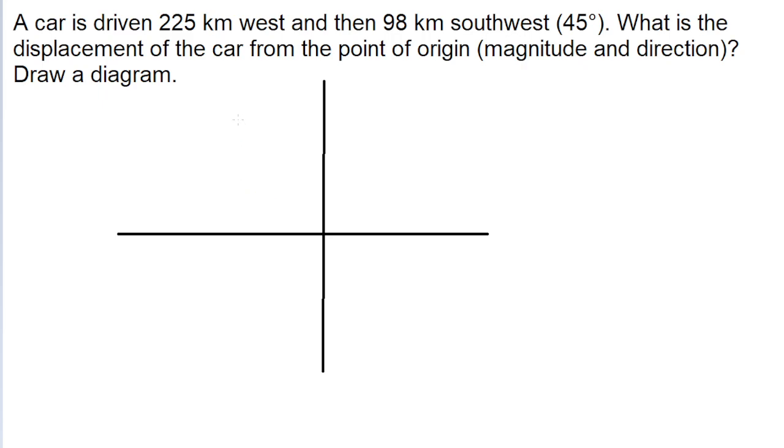And so it says the car drives 225 kilometers west. So the very first vector we'll represent points directly to the left, towards the western direction. And we'll call that the displacement west.